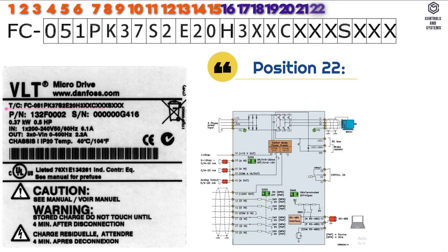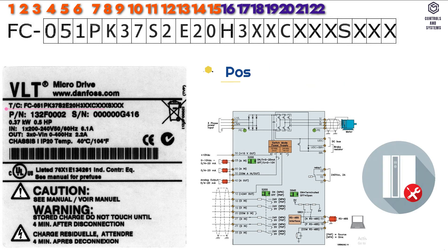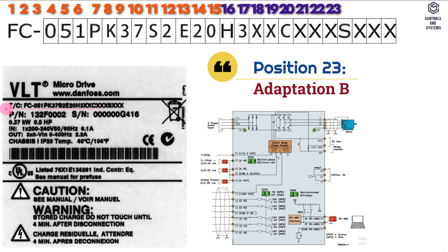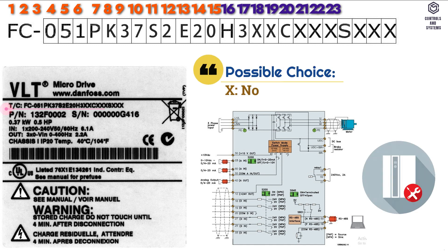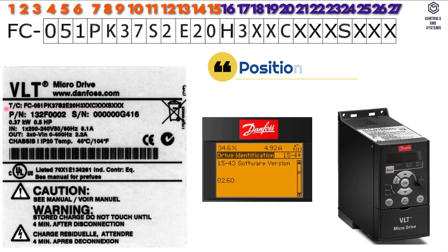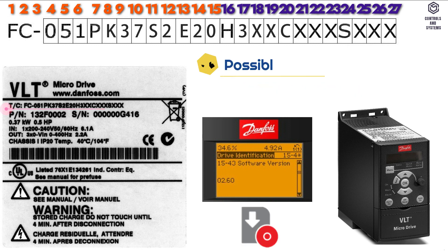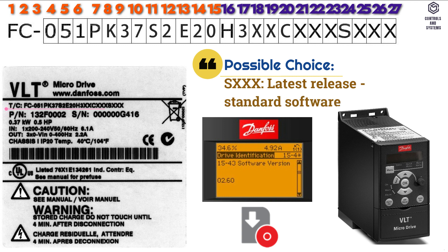Position 22 is adaptation A, possible choice is no adaptation. Position 23 is adaptation B, possible choice is no adaptation. Position 24 to 27 is software release, possible choice is latest release standard software.